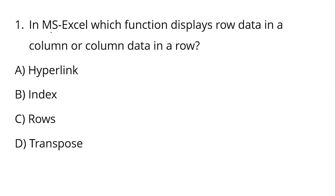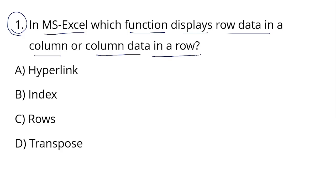Question number 1: In MS Excel, which function displays row data in a column and column data in a row? The answer is Option D — the TRANSPOSE function. TRANSPOSE converts row data to column and column data to row.